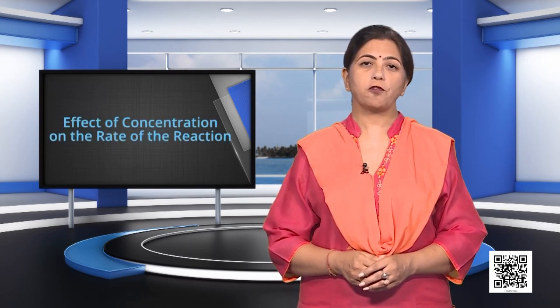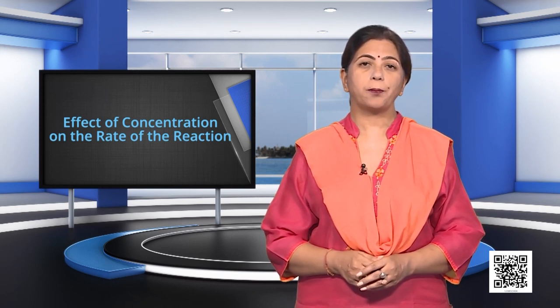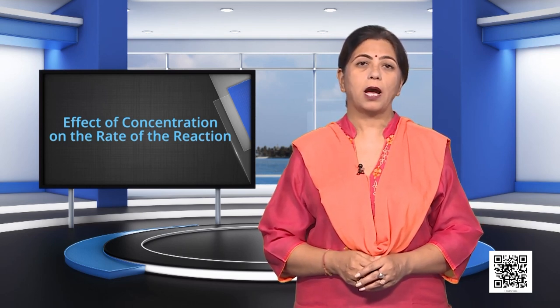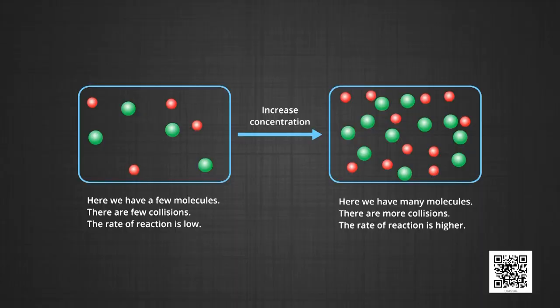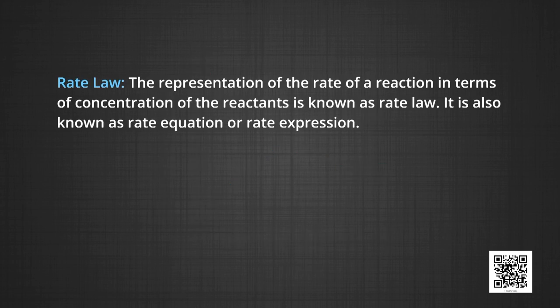First of all, the effect of concentration on the rate of the reaction. The rate of a chemical reaction at a given temperature may depend on the concentration of one or more reactants and products. It is found that the concentration of the reactants decreases while the concentration of the products increases with the passage of time. You can see the graph showing the variation of concentration with passage of time. The representation of the rate of the reaction in terms of the concentration of the reactants is known as rate law, also known as the rate equation or rate expression.